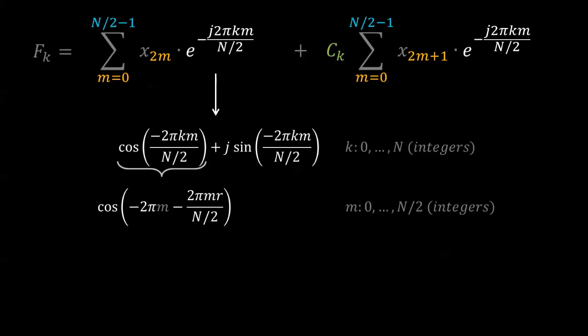Now every time that you add a multiple of 2pi to the operand of the cosine, you end up with simply the cosine function without the 2pi multiple. So every time your k value is larger than n over 2, it's simply a repeat of the k value minus n over 2.